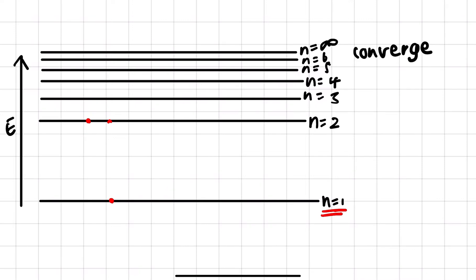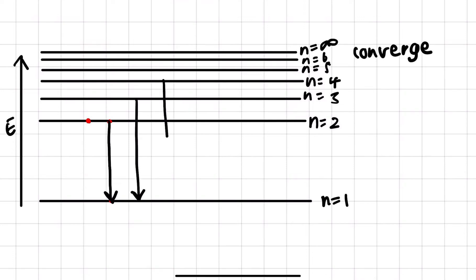When focusing on the emission spectrum, we draw lines going down, because electrons are emitting photons or emitting energy. The first series goes to n equals 1. Transitions from n equals 2 to n equals 1, n equals 3 to n equals 1, and n equals 4 to n equals 1 are all going to be UV radiation.